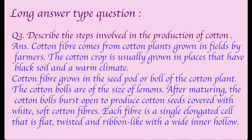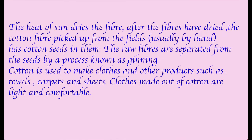Each fiber is a single elongated cell that is flat, twisted, and ribbon-like with a wide inner hollow. The heat of the sun dries the fiber. After drying, the cotton fiber is picked from the fields, usually by hand, along with cotton seeds. The raw fibers are separated from the seeds by the process of ginning. Cotton is used to make clothes, towels, carpets, sheets, and other products. Cotton clothes are light and comfortable.